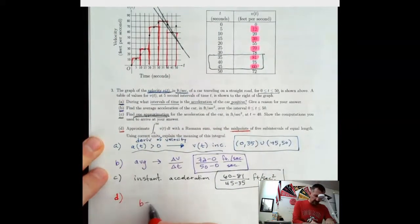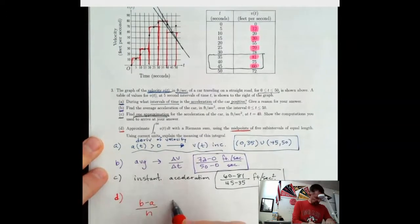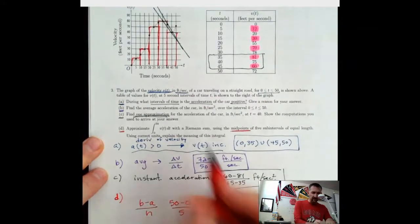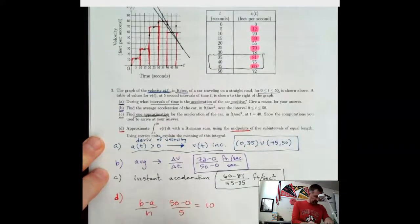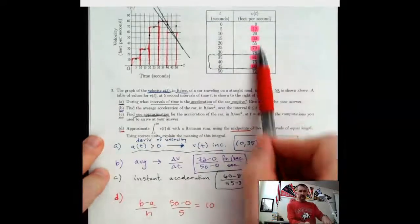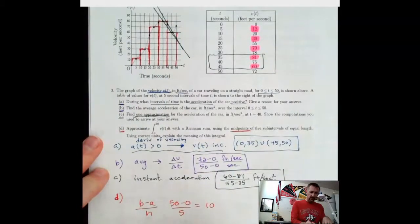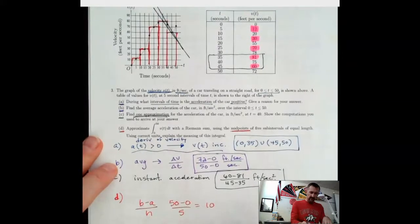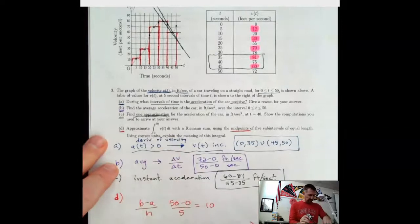So the formula, if you remember, is B minus A over N. And so that's going to be 50 minus 0 over 5, which is 10, which we can see right there anyway. It's 10. So that's 10. And then we're going to use these heights right here. So that's going to be 12 and 30 and 70 and 81 and 60. And it says using correct units.